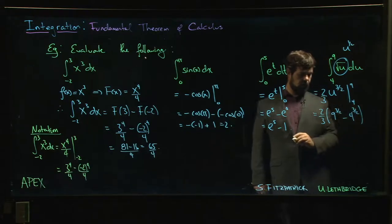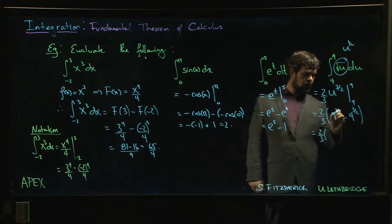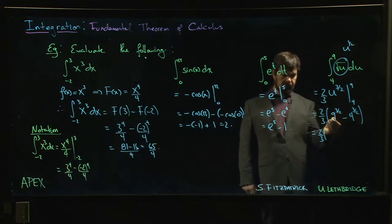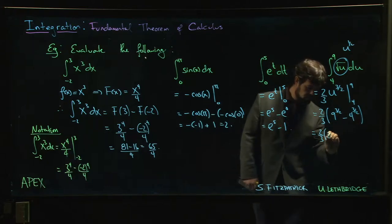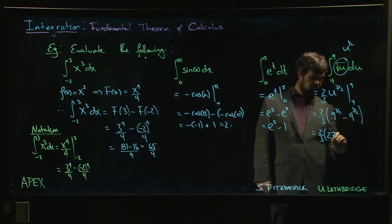Okay, so nine to the three over two minus four to the three over two. And if you want to clean up a little bit, nine to the three over two, that means we take the square root of nine and then we cube it. Square root of nine is three, three cubed is 27. Same thing here: square root of four is two, two cubed is eight.